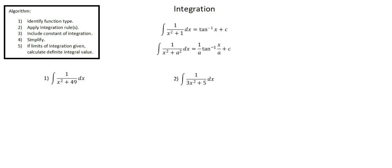At the top of the screen, we have two integration rules. The integral of 1 over x squared plus 1 with respect to x is inverse tangent of x plus c. And a more general integration rule is the integral of 1 over x squared plus a squared with respect to x, which equals 1 over a times inverse tangent of x over a, plus c. It's the second rule that we'll use in both of our examples.